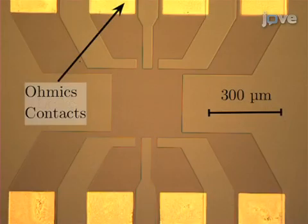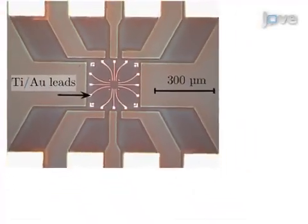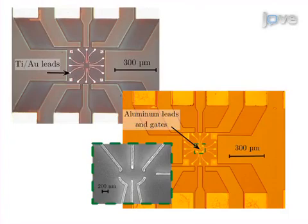The second step is to fabricate ohmic contacts using photolithographic and rapid thermal anneal processes. Next, the leads and gates defining the dot are fabricated by electron beam lithography.